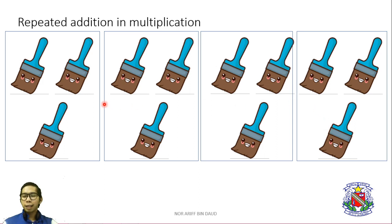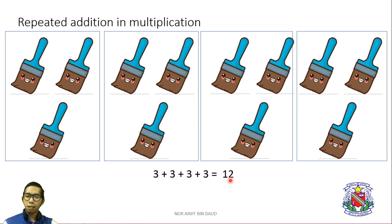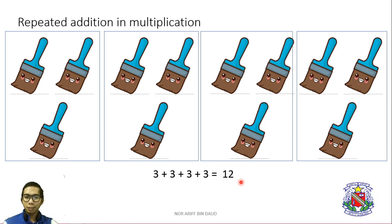Now let me show you the example number sentence for repeated addition. The number sentence will be like this: 3 plus 3 plus 3 plus 3 equals 12. 12 means the total of paintbrushes we have here all together. Let me check: 1, 2, 3, 4, 5, 6, 7, 8, 9, 10, 11, 12. So my answer is 12.